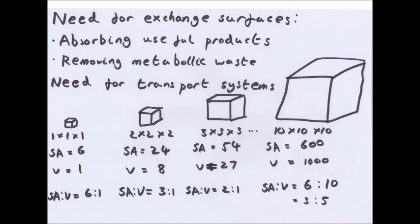For a small organism it has a large surface area relative to its small volume. As the organism increases in size, its volume increases but its surface area doesn't increase as much. For example, from a one-unit cube to a ten-unit cube: length increases by ten times, surface area increases by one hundred times, but volume increases by one thousand times. So the surface area wouldn't be able to get enough oxygen in for the whole organism, particularly towards the centre, without a transport system and exchange surface.